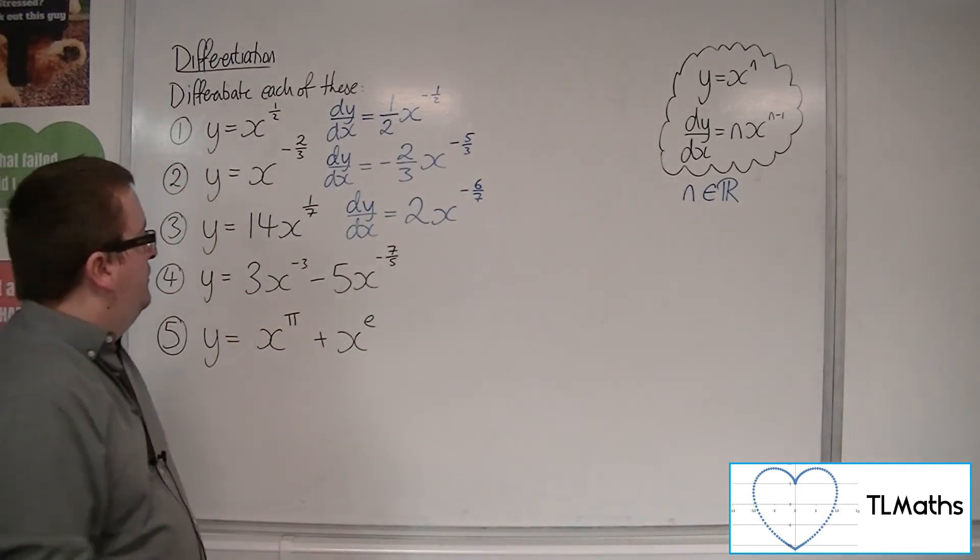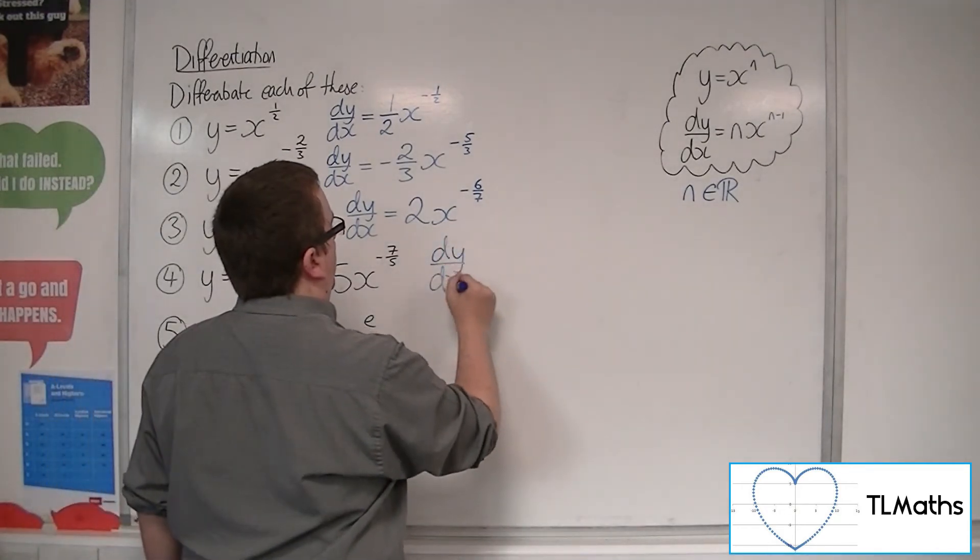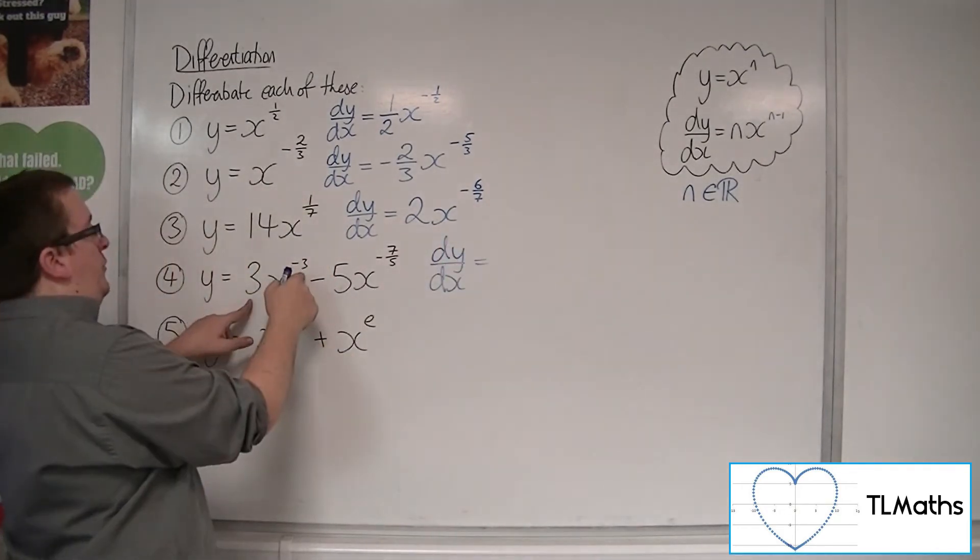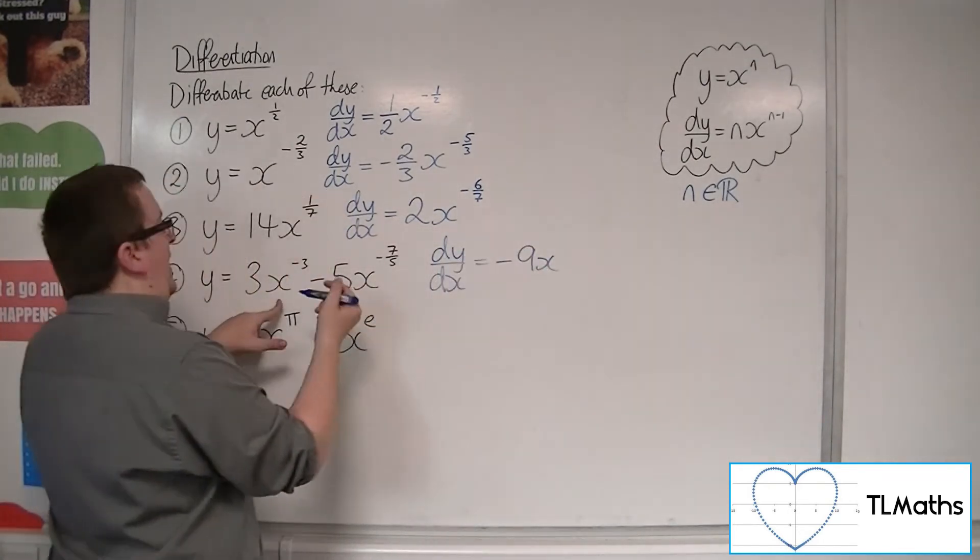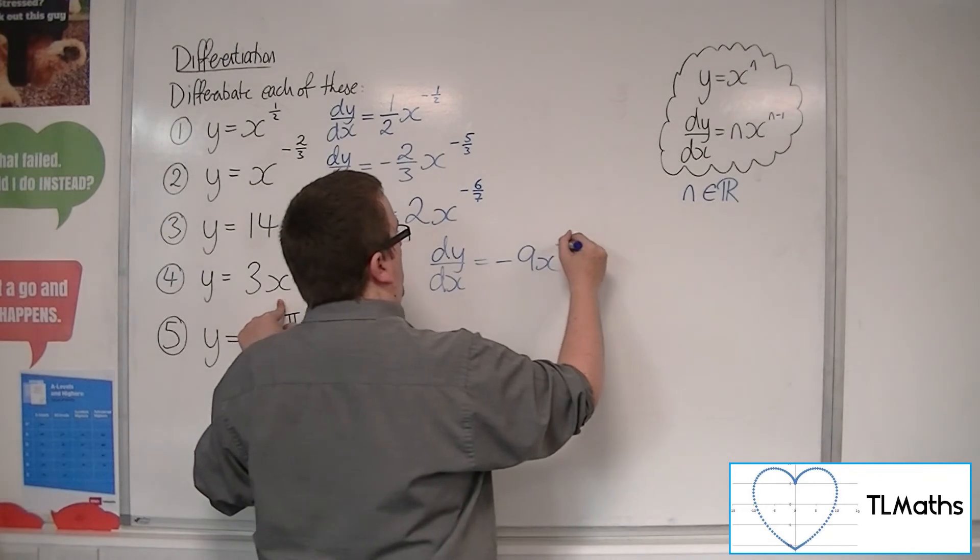Number 4. So the minus 3 comes down and multiplies with the 3, so minus 9x. Take 1 off the power. Minus 3 take away 1 is minus 4.